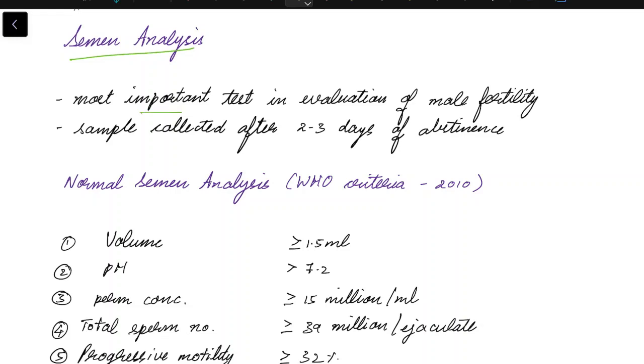Semen analysis is the most important test in evaluation of male fertility. The sample for semen analysis should be collected after two to three days of abstinence.